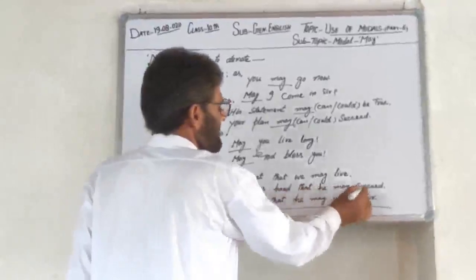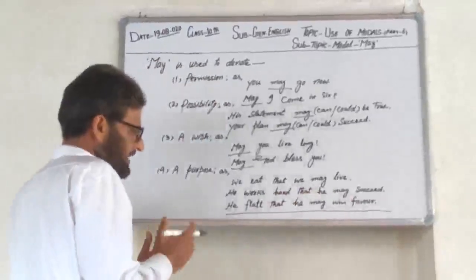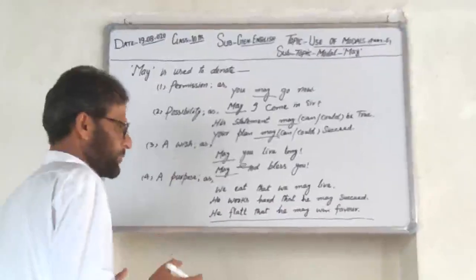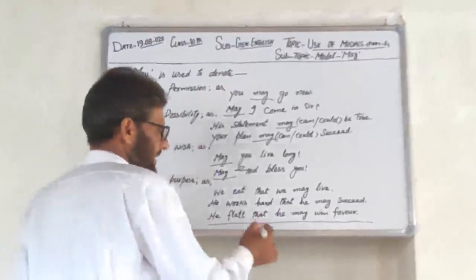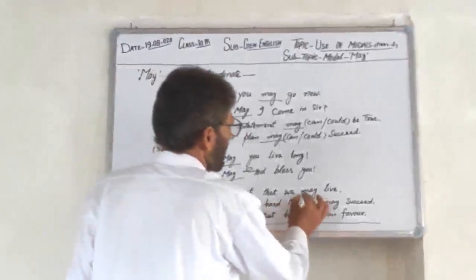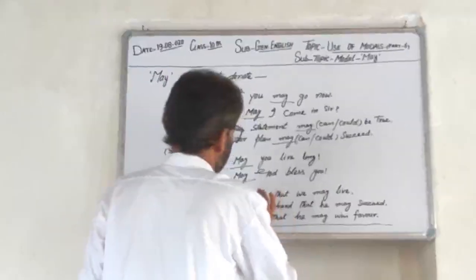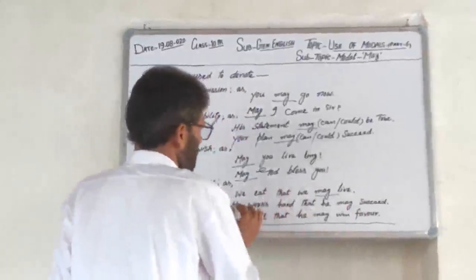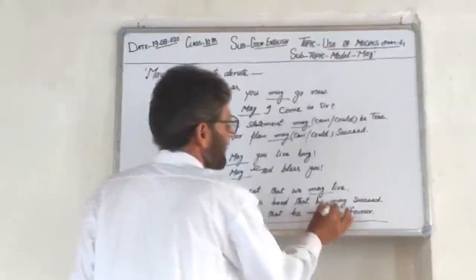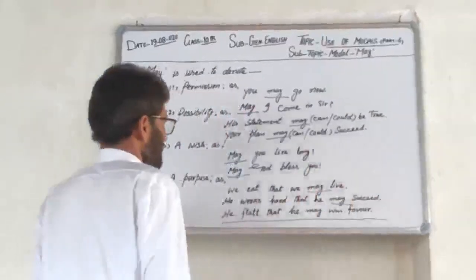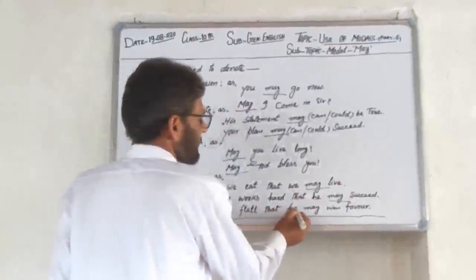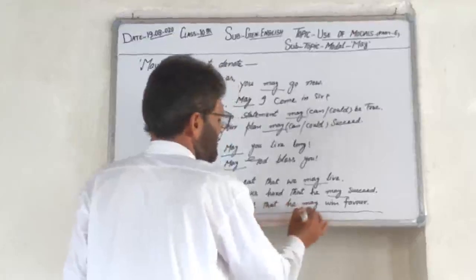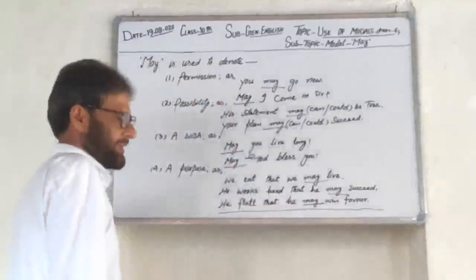دوسری مثال: 'He works hard that he may succeed.' وہ سخت محنت کرتا ہے تاکہ وہ اپنے مقصد میں کامیاب ہو جائے۔ تیسری مثال: 'He flatters that he may win favor.' ان تمام مثالوں میں بھی Purpose کا اشارہ ہے اس لیے Modal May کا استعمال کیا گیا۔